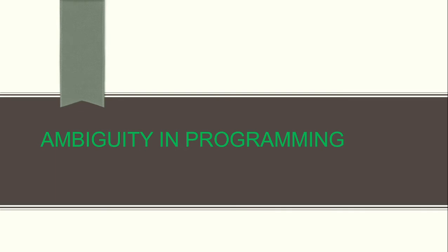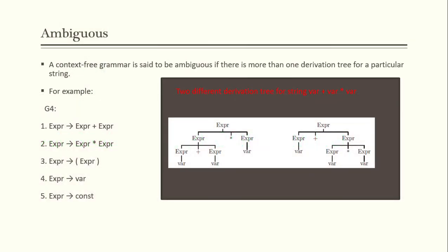For today's lecture, we will continue to look into ambiguity in programming. In the context of a context-free grammar, a grammar is said to be ambiguous if there is more than one derivation tree for a particular string. For example, for the string 'var plus var multiplied by var', there are two derivation trees that can generate this string, so we say this grammar is ambiguous — meaning there are different ways to produce a string.